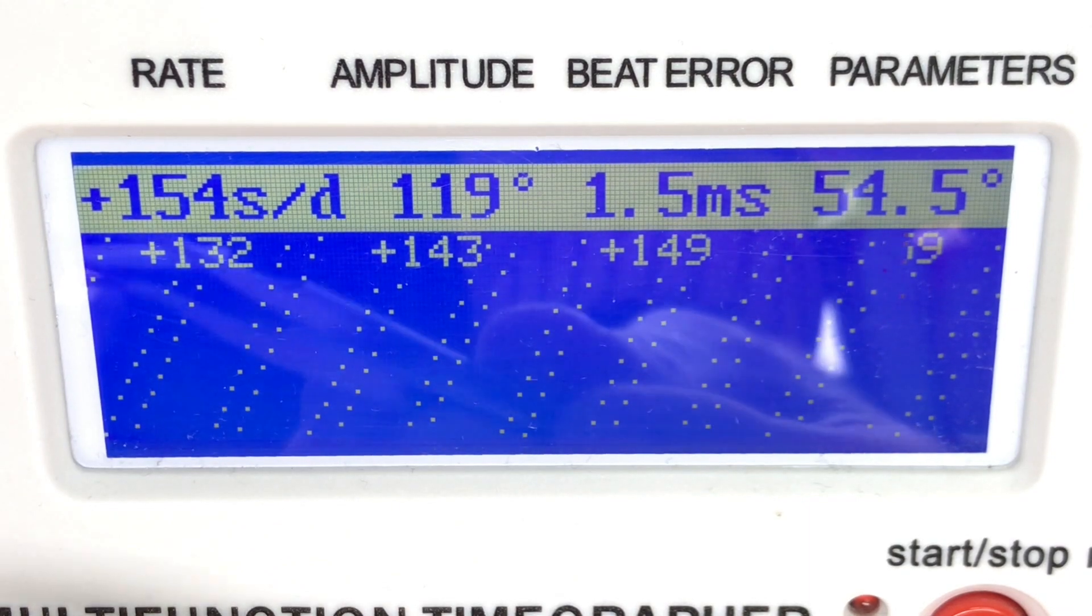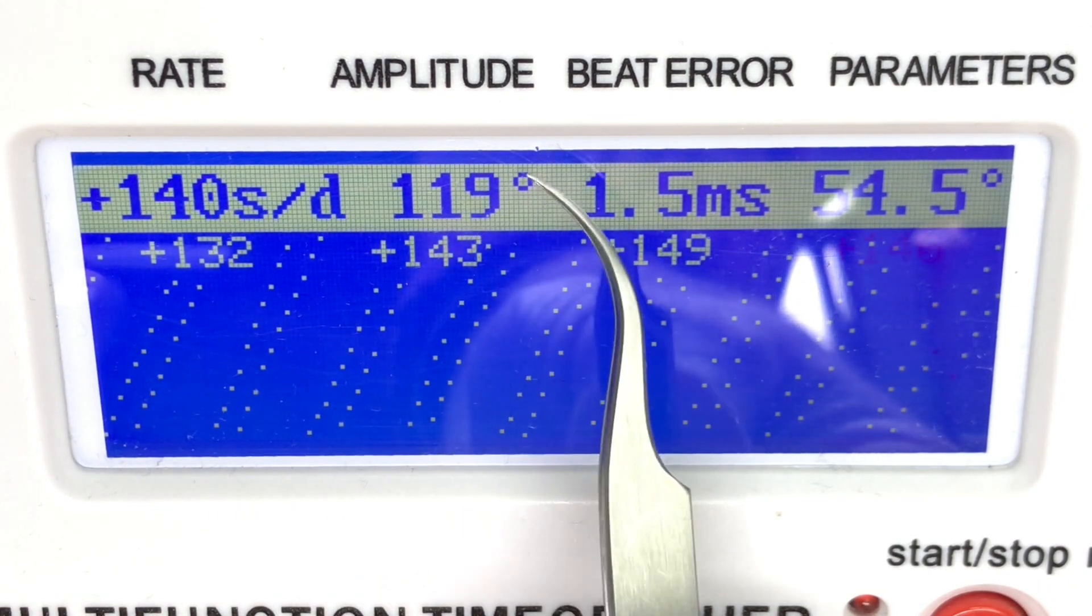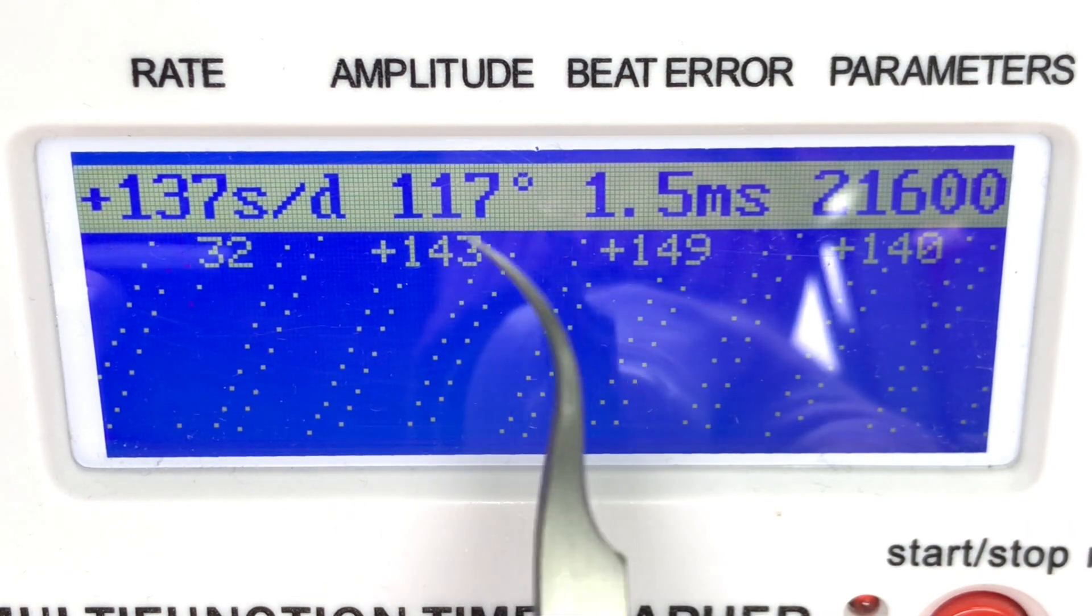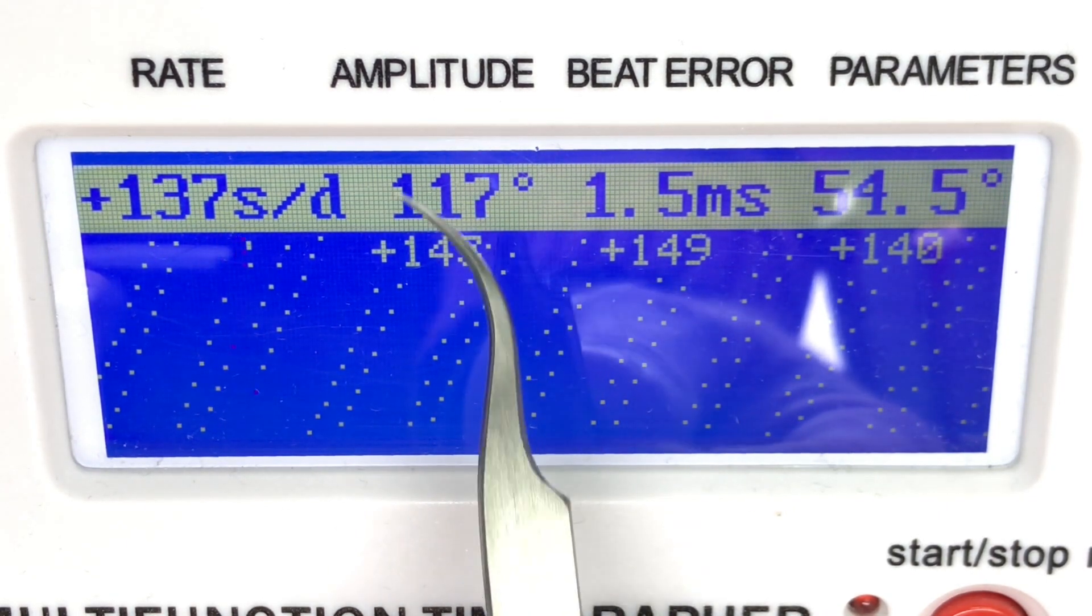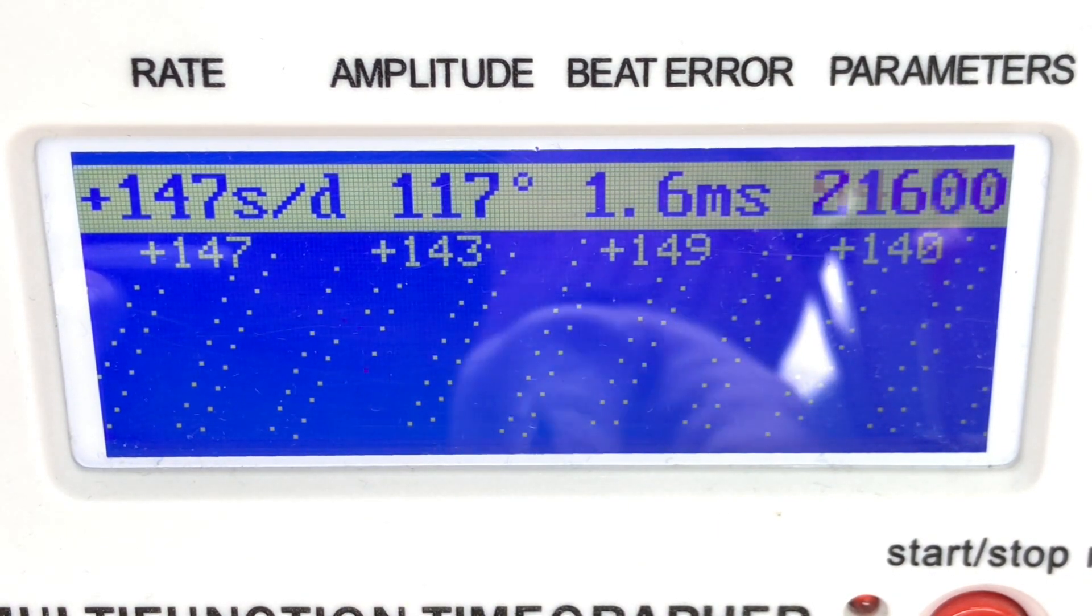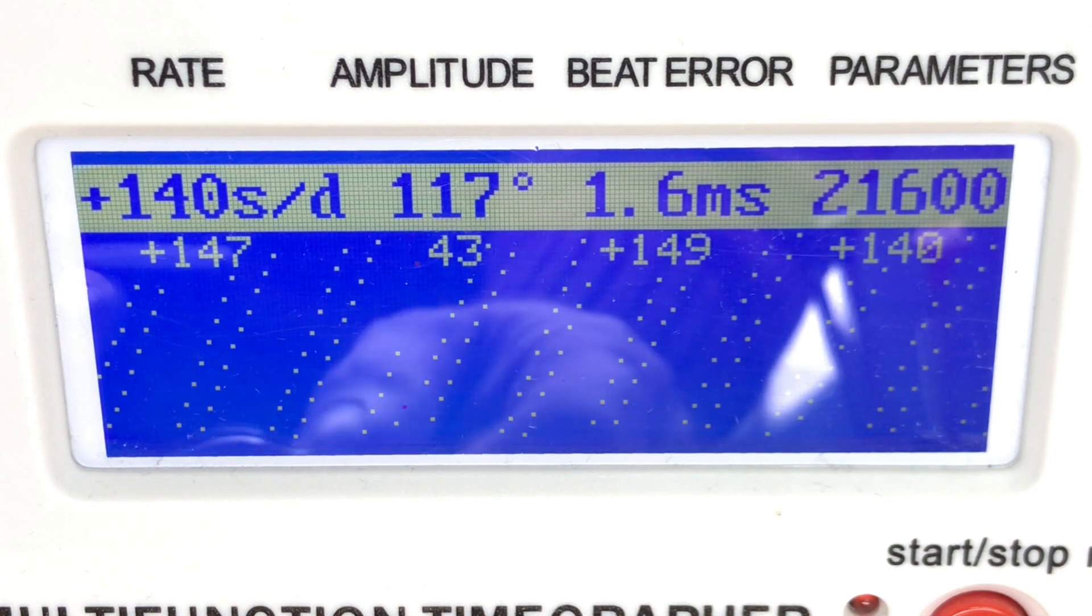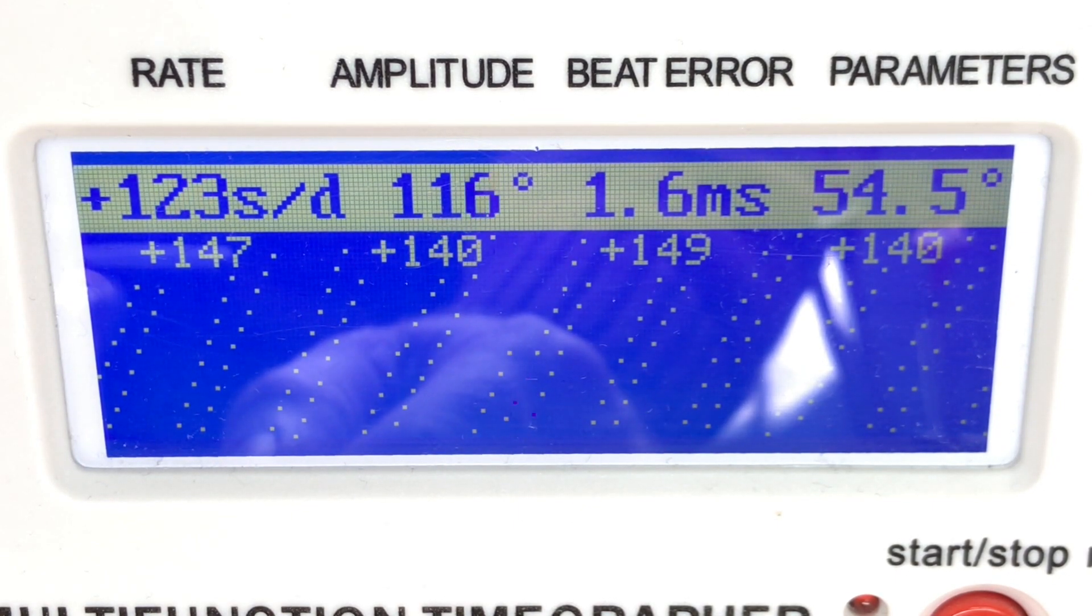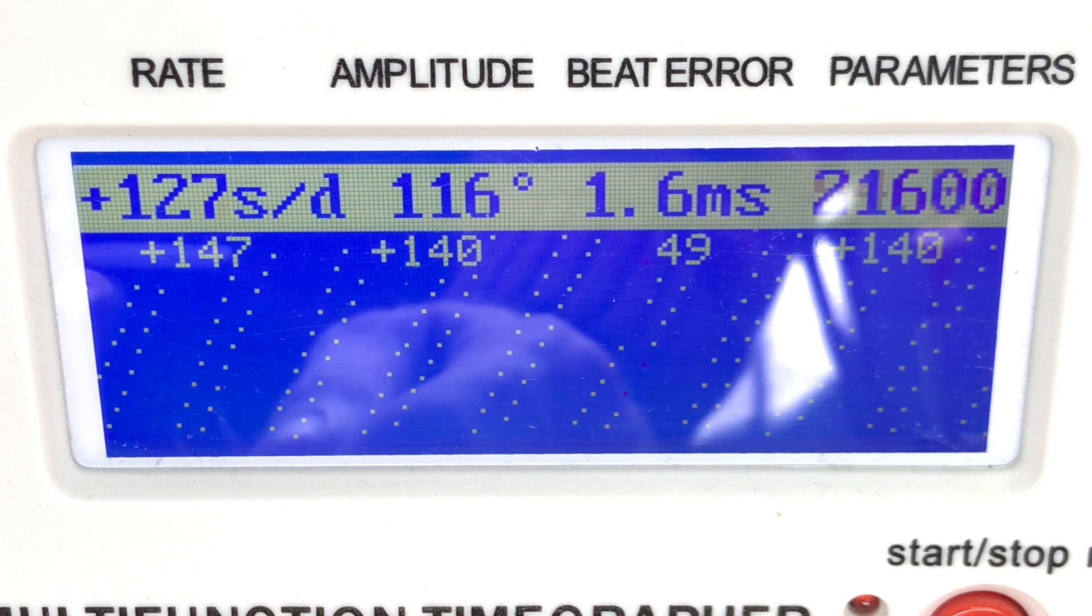This number tells us is the power from the mainspring efficiently working its way through the movement. And like I said, it's dropping. There's always a bit of a power spike when you first wind a watch, but this is about 110 to 120 degrees below where this watch should be. That comes from bad lubrication, lack of lubrication, sticky old stuff that has gone into resin rather than staying lubricant-like. That's problematic, but that's all service. That's what we're here to do, is to bring that number into spec.